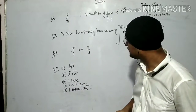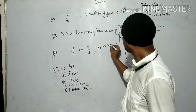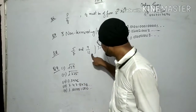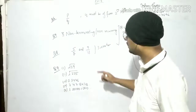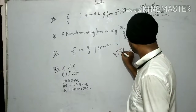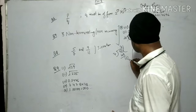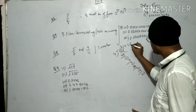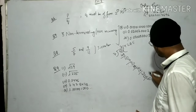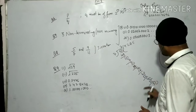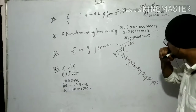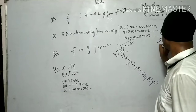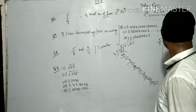Find 3 irrational numbers between 5 upon 7 and 9 upon 11. First solve them. 5 ÷ 7: 7 × 7 = 49, remainder 1; 7 × 1 = 7, remainder 3; 7 × 4 = 28, remainder 2; 7 × 2 = 14, remainder 6; 7 × 8 = 56, remainder 4; 7 × 5 = 35, remainder 5 — and 50 appeared again, so it repeats. So 5/7 = 0.714285 with bar (repeating).